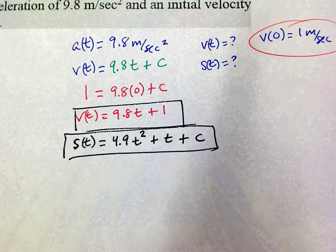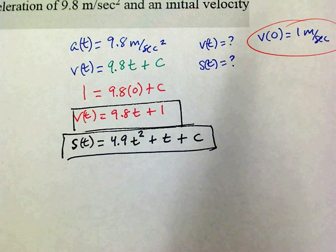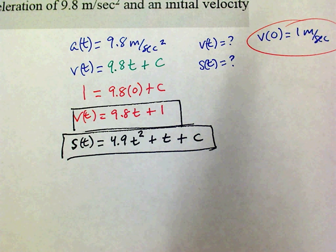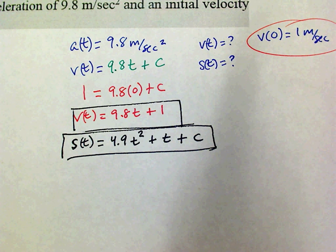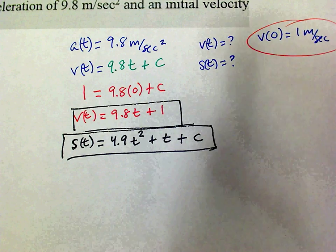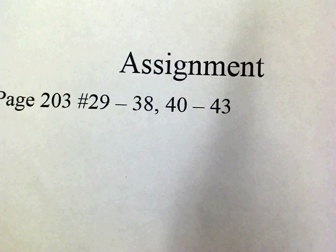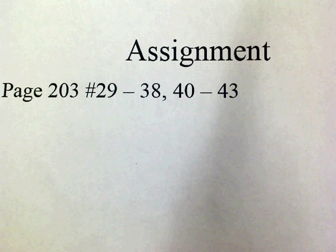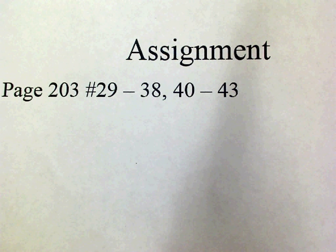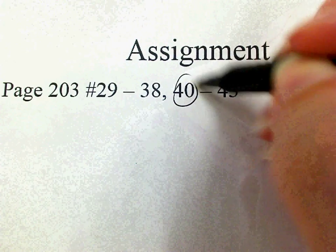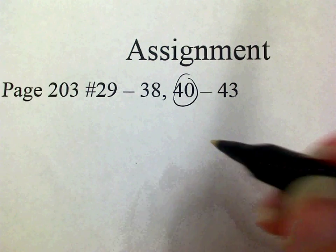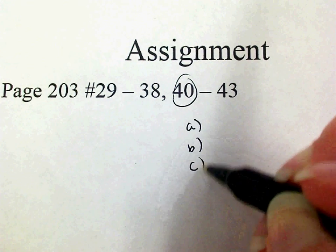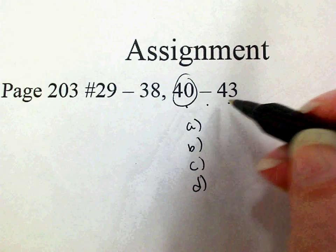All right. So let's spend the rest of the period doing that homework. Now guys, on question 40, it's going to ask you to graph, and then it's going to have A, B, C, and D. It's going to have some stipulations that you've got to meet, and then you've got to graph. So that means you're going to have four graphs on that. You'll understand it when you see it, but 40, you are going to have to graph four graphs. Okay.